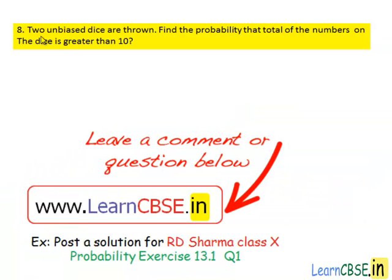Let's see the 8th question. Two unbiased dice are thrown. Find the probability that total of the numbers on the dice is greater than 10.